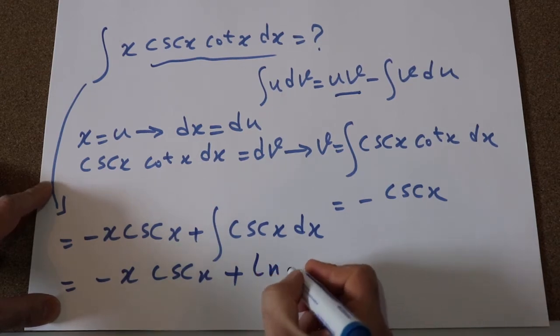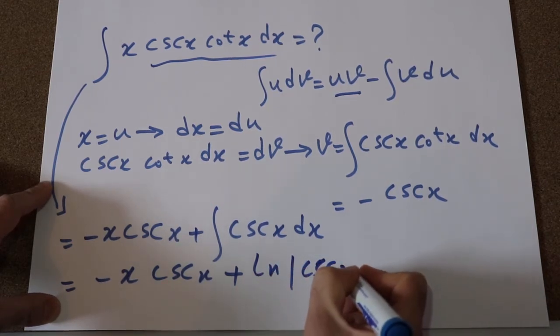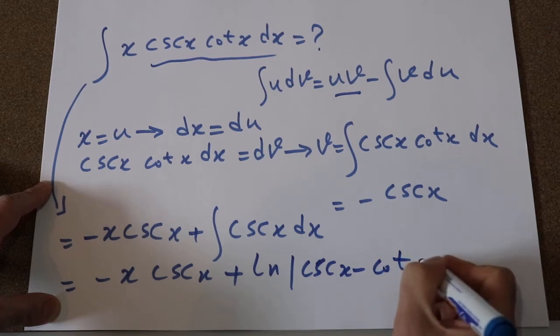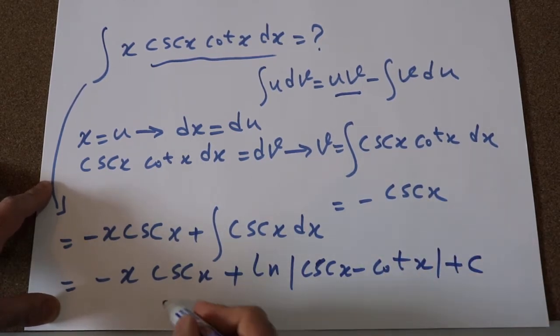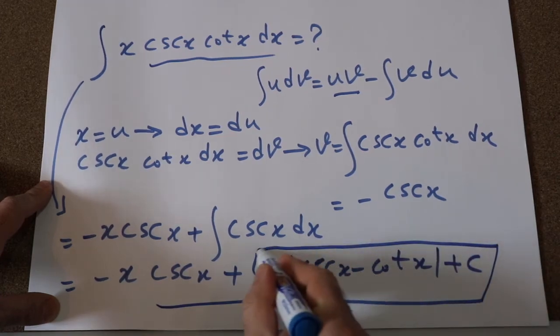that is equal to ln of cosecant x minus cotangent x plus c, which is the constant of the integral. And that is the solution to our integral.